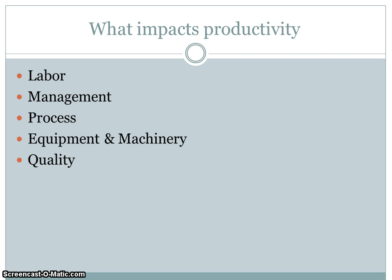What are some things that impact productivity? Basically anything that affects the output-divided-by-input formula. Consider your labor — how skilled, efficient, and fast they are. Your management team and how well they understand their processes. The process itself and how efficiently it's laid out, including waste. The types of equipment and machinery — outdated slow machinery versus technologically updated fast machinery. And quality in terms of defects: any product with a defect that must be scrapped represents input of labor and material with no usable output, since you can't sell it.